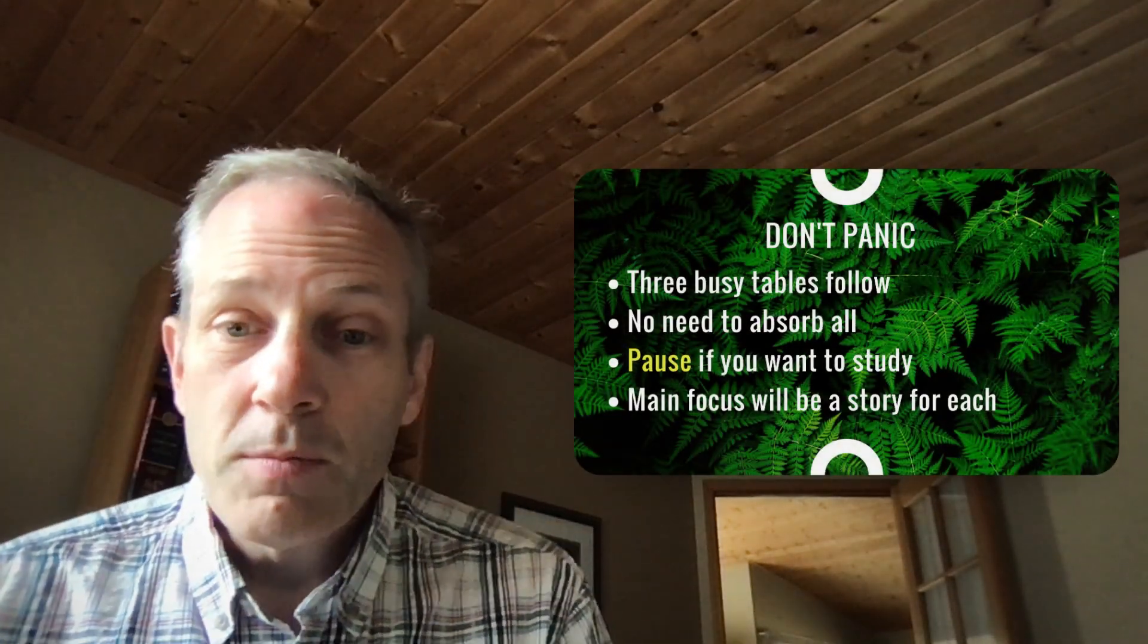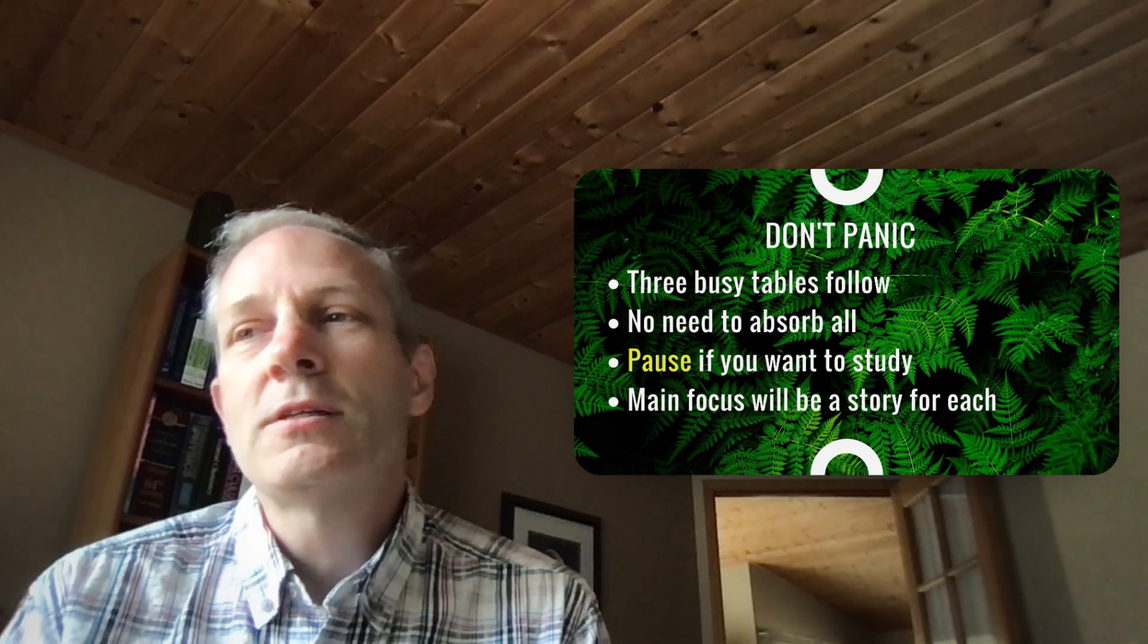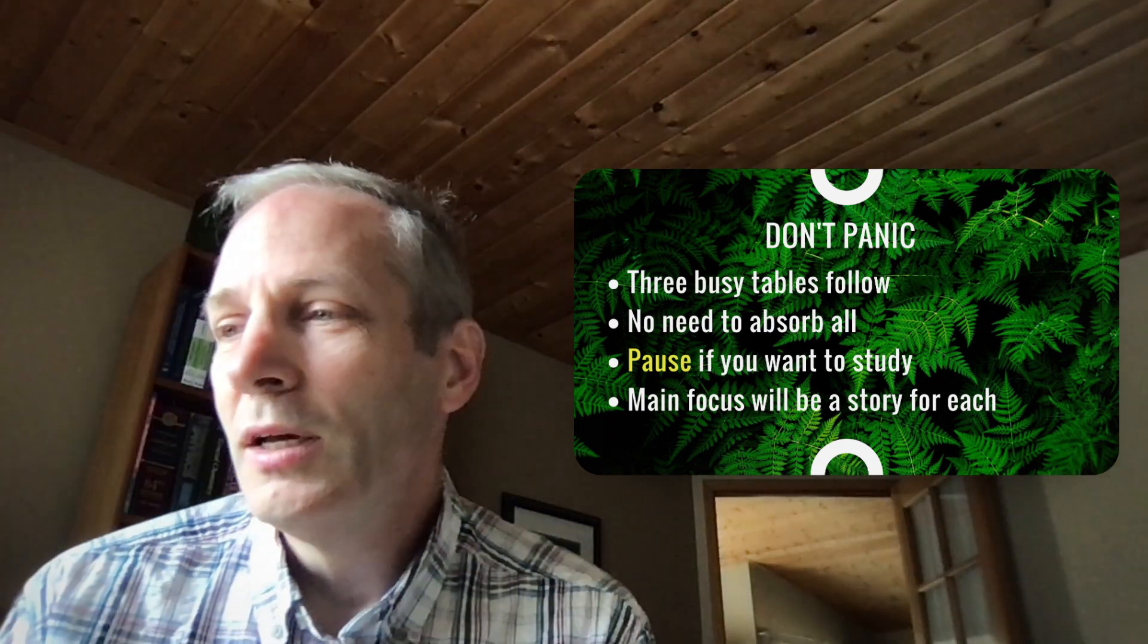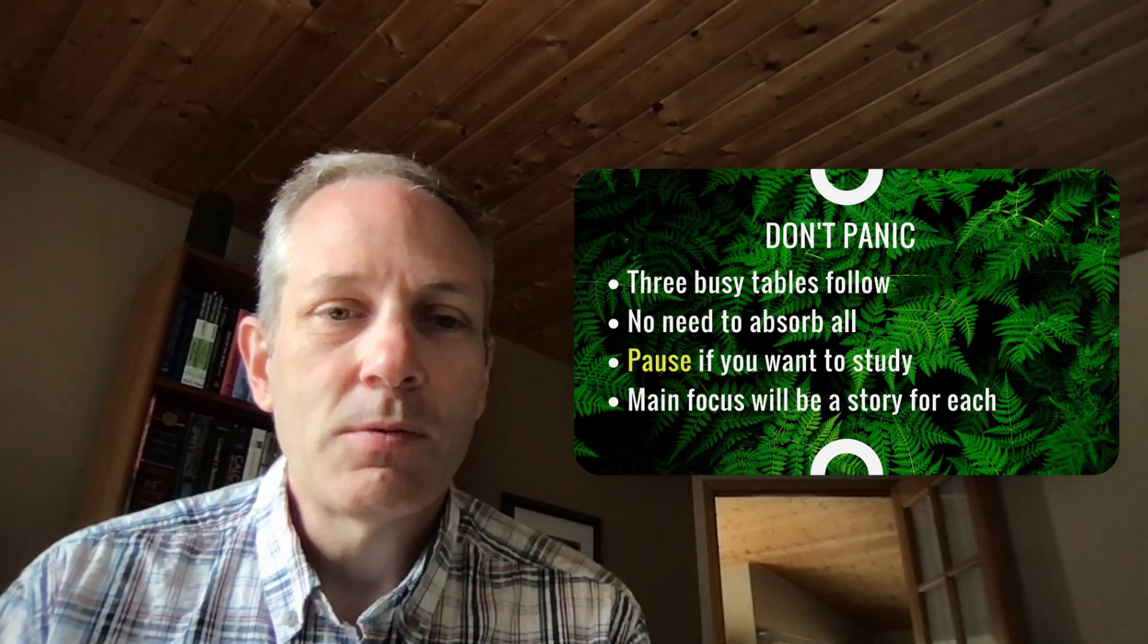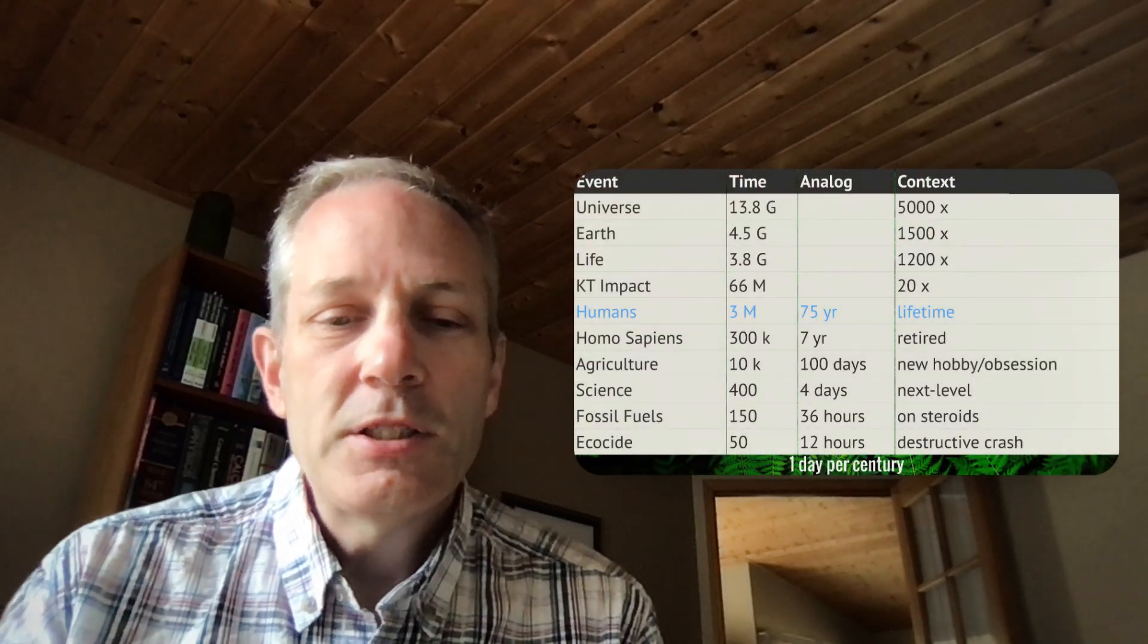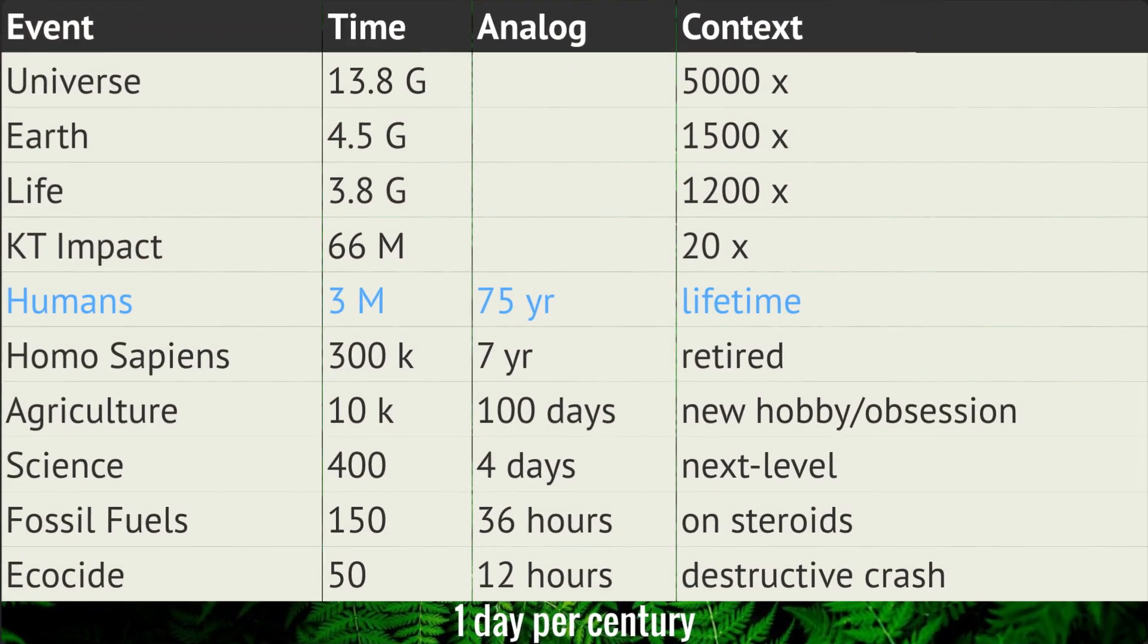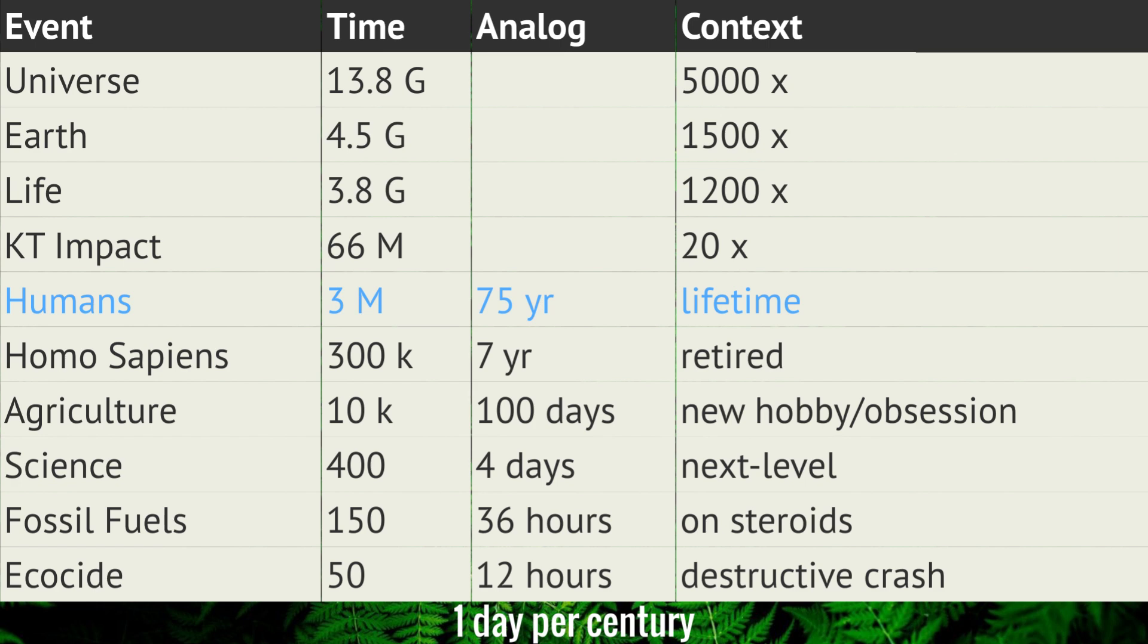Okay, so I'm going to do three different comparisons. Each one will have a large table. There's a lot of information, but there's no need to absorb it all. You can always pause if you want to study it, but you don't really have to, because I'll have a story that goes along with each. In each table, the left two columns will be the same, with the same events and numbers that we went through before. Each table will have a line in blue that identifies the starting point in our comparison. So in this first case, we're going to equate a familiar human lifetime, about 75 years, to the lifetime that humans have been on Earth, and that gives us about one day per century.